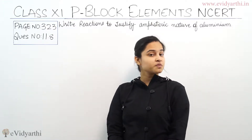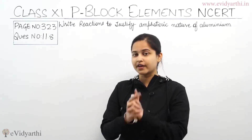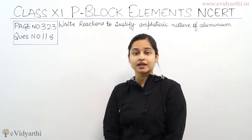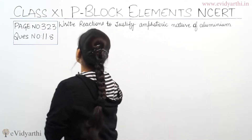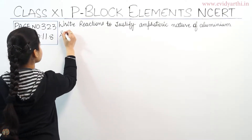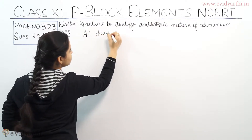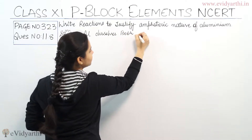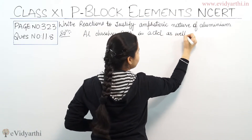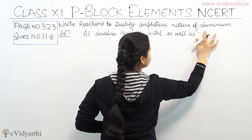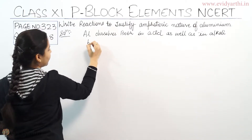I will tell you that aluminium dissolves both in alkali as well as in acid, evolving dihydrogen gas. Now have a look at the reactions when aluminium is reacted with an acid and with an alkali. Aluminium dissolves both in acid as well as in alkali, evolving dihydrogen gas.